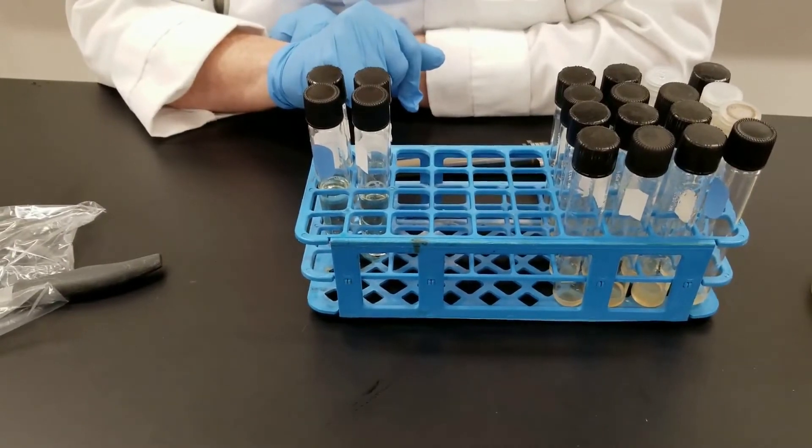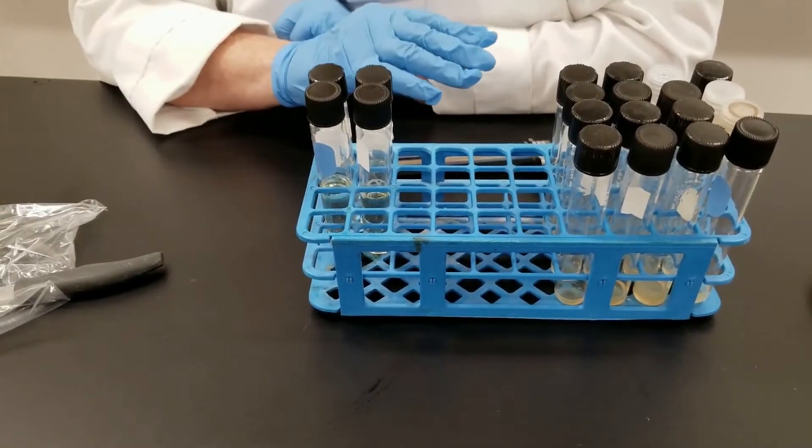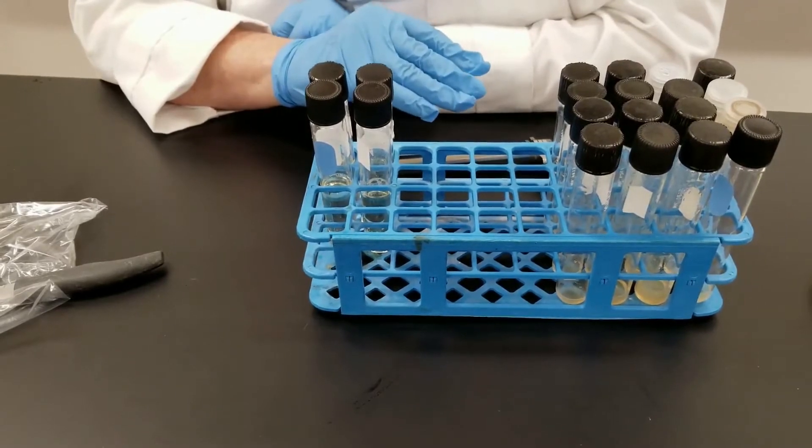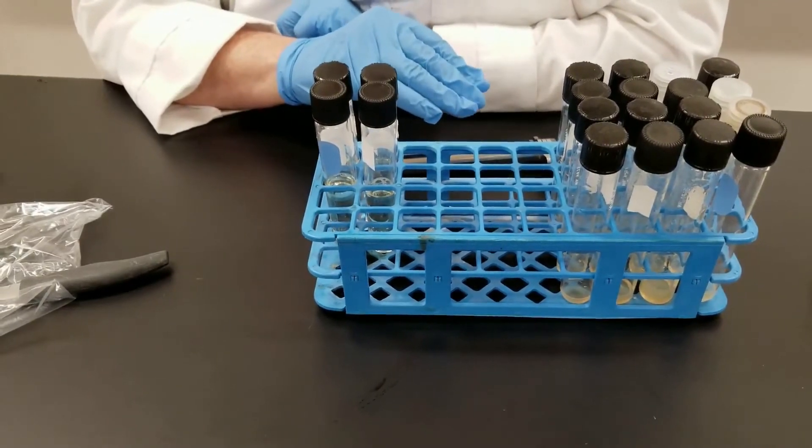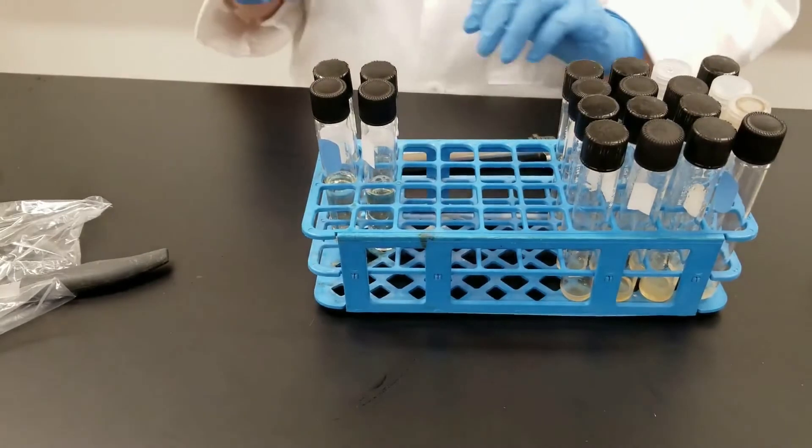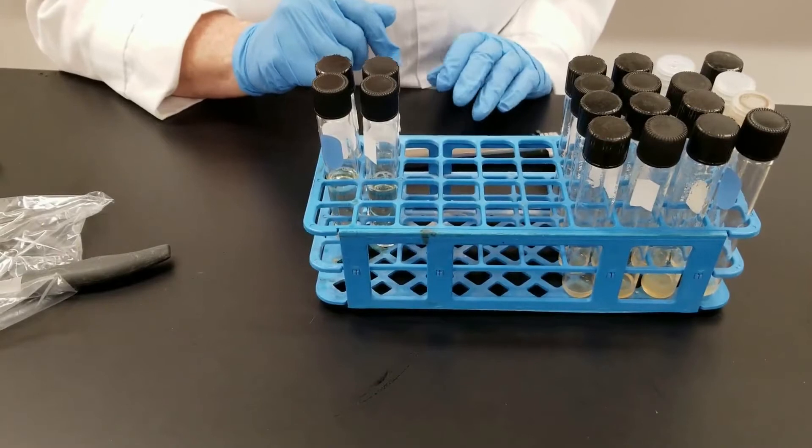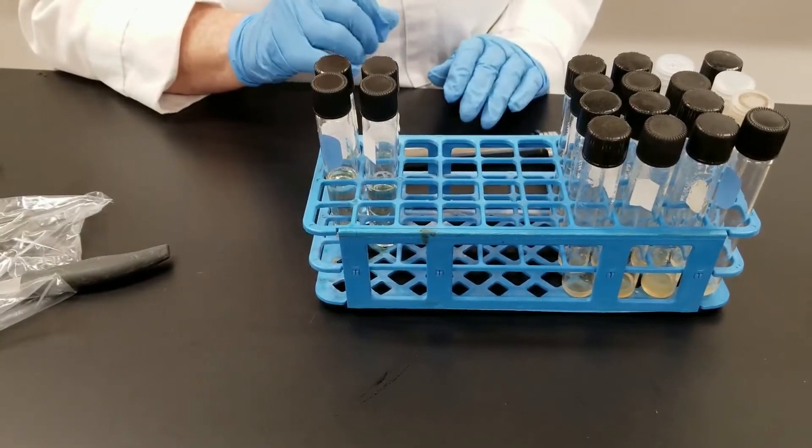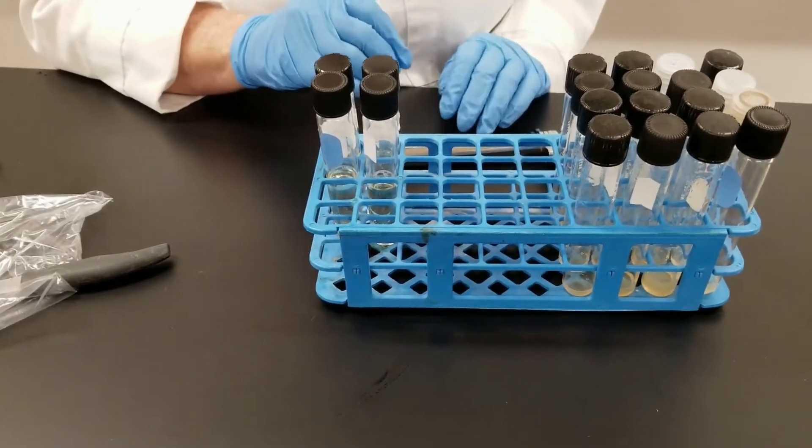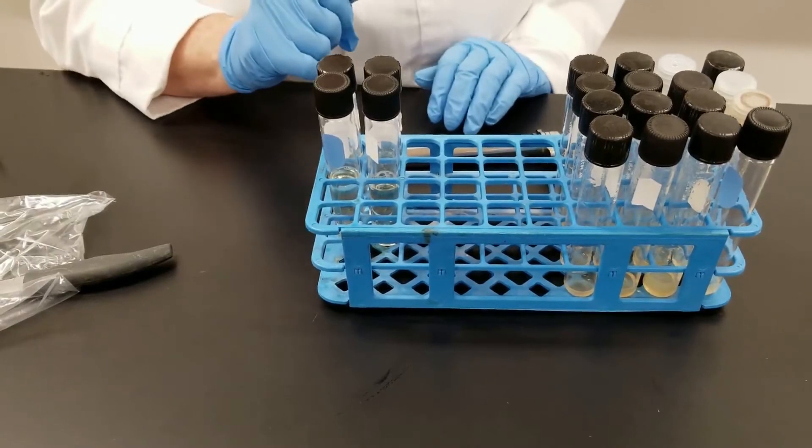fungi prefer more acidic environment, and so we often drop the pH down a bit. The media that we grow bacteria in is usually anywhere from pH 7, which is neutral, to pH 7.5, maybe up to 8, and bacteria prefer that, but fungi don't. They prefer media in a pH range from about 5.5 to 6.5, so you have to drop the pH down a bit.